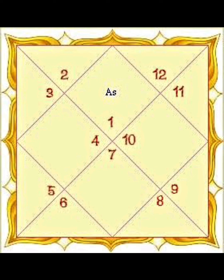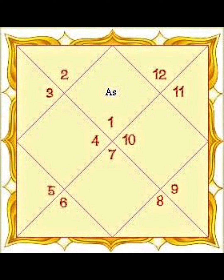In Bhrigu Nandi Nadi, we also look at conjunctions through aspects. If two planets have a seventh aspect between each other, they are considered in some sort of conjunction. If one planet casts a second aspect on another, those two planets are also considered in conjunction — that is a 2-12 aspect relationship. Planets in the same zodiac sign or house have 100 percent aspect and are fully in conjunction. The 3-11 aspect is also relevant and must be considered.